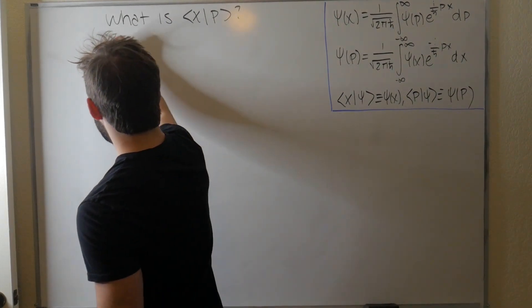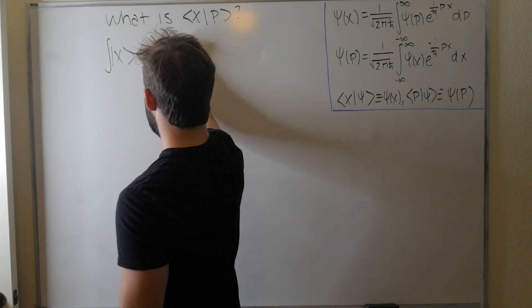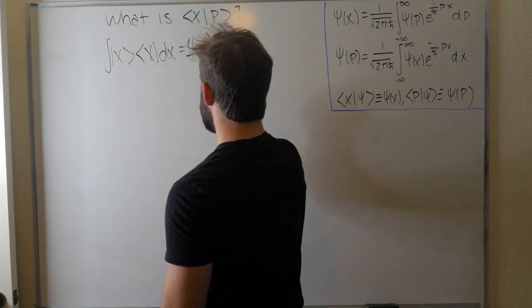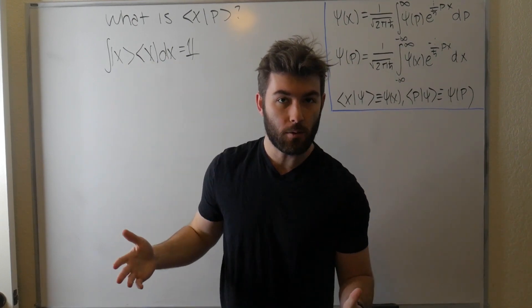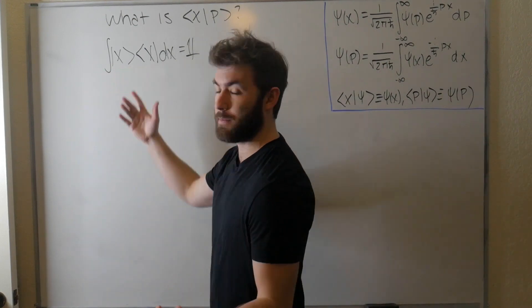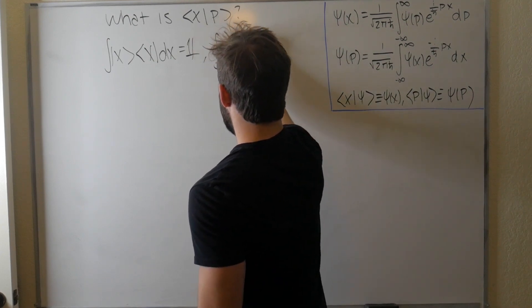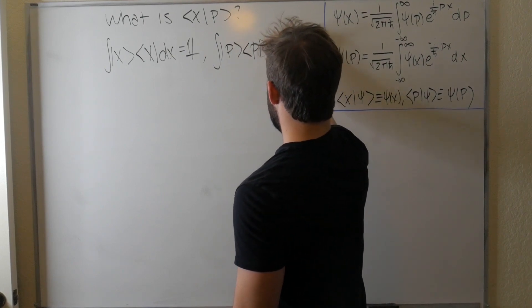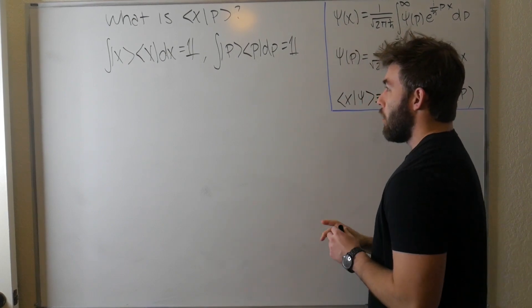What I mean is we can form a completeness relation out of them. In other words, we can say that the integral of the outer product of these position dx is equal to the identity matrix. Why is this an integral? Well, these ket vectors are not discrete, they're actually continuous, also known as improper direct vectors. So since they're continuous, that summation becomes an integral. Same thing goes for momentum. If we integrate over the outer product of momentum eigenstates dp, we get the identity matrix as well.